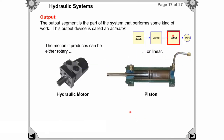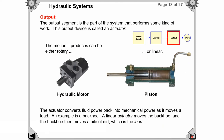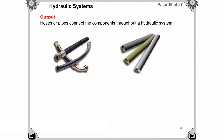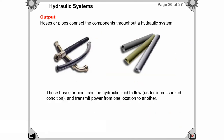The output segment is the actuator — either a linear actuator or a rotary actuator. A hydraulic motor provides rotary output, and a piston provides linear strokes: extension and retraction. The actuator converts fluid energy into mechanical power. Hoses and pipes are used to provide fluid to the hydraulic system.